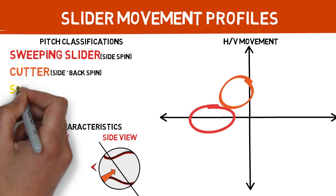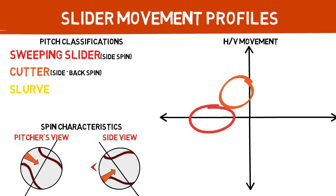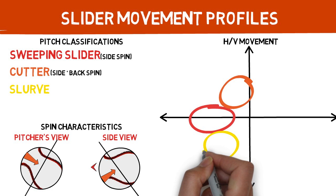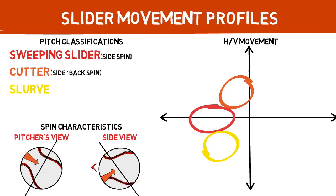Now onto the slurve. As I talked about in the curveball video, slurves are one of the least effective pitch movement profiles, especially if you throw both a curveball and a slider. This pitch travels with negative vertical and horizontal break, falling into that area on our movement chart. The only difference from the cutter in terms of spin characteristics is the axis out of the hand will flip, meaning the athlete is now getting more over the top of this pitch rather than straight through it, making it move more like a curveball — hence the name. This pitch has a combination of side spin and top spin.